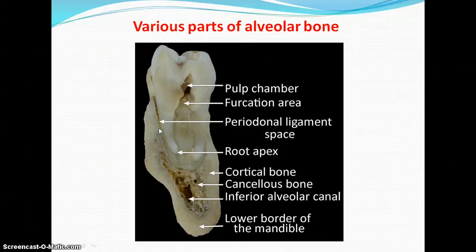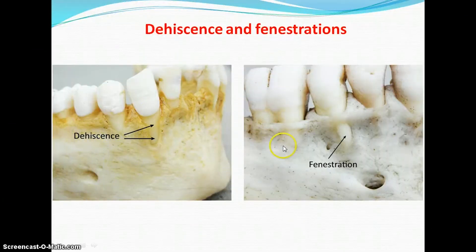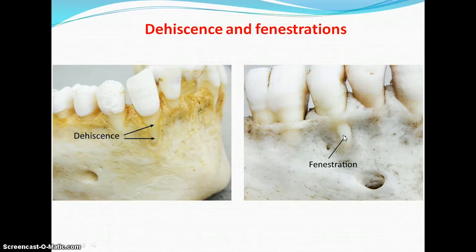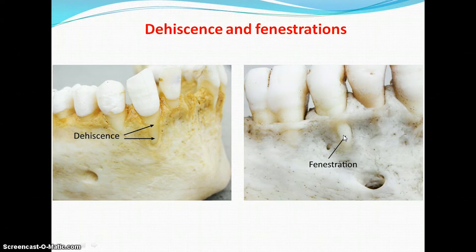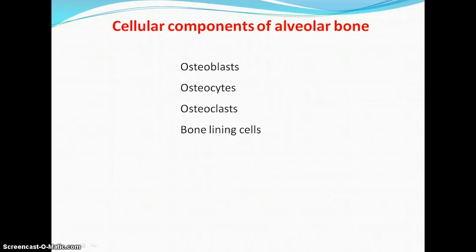The supporting alveolar bone is the remaining bone of the alveolar process except the alveolar bone proper. Dehiscence and fenestration are commonly found in alveolar bone. A dehiscence is the loss of alveolar bone on the facial aspect of the teeth, leaving a characteristic oval root-exposed defect from the cementoenamel junction apically. A fenestration is a circumscribed hole in the cortical plate over the root surface which does not communicate with the crestal margin.